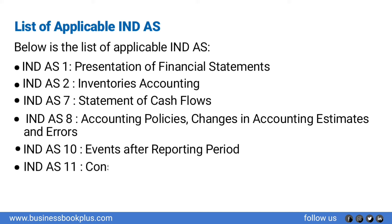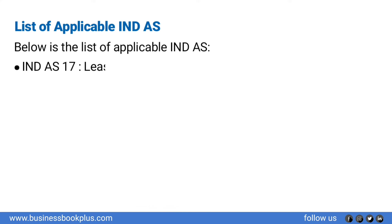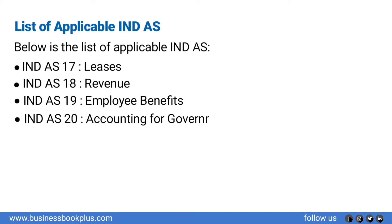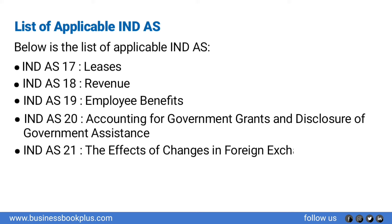Ind AS 11 — Construction Contracts. Ind AS 12 — Income Taxes. Ind AS 16 — Property, Plant and Equipment. Ind AS 17 — Leases. Ind AS 18 — Revenue. Ind AS 19 — Employee Benefits. Ind AS 20 — Accounting for Government Grants and Disclosure of Government Assistance. Ind AS 21 — Effects of Changes in Foreign Exchange Rates.